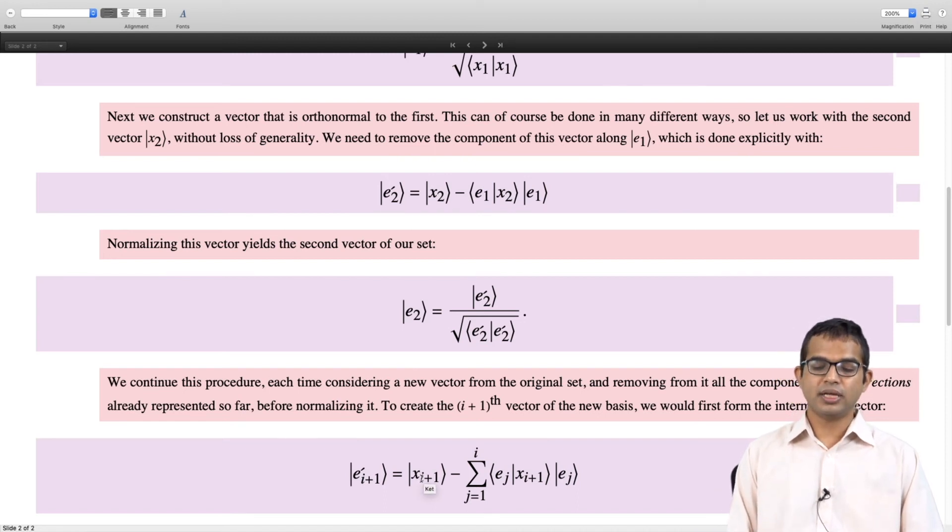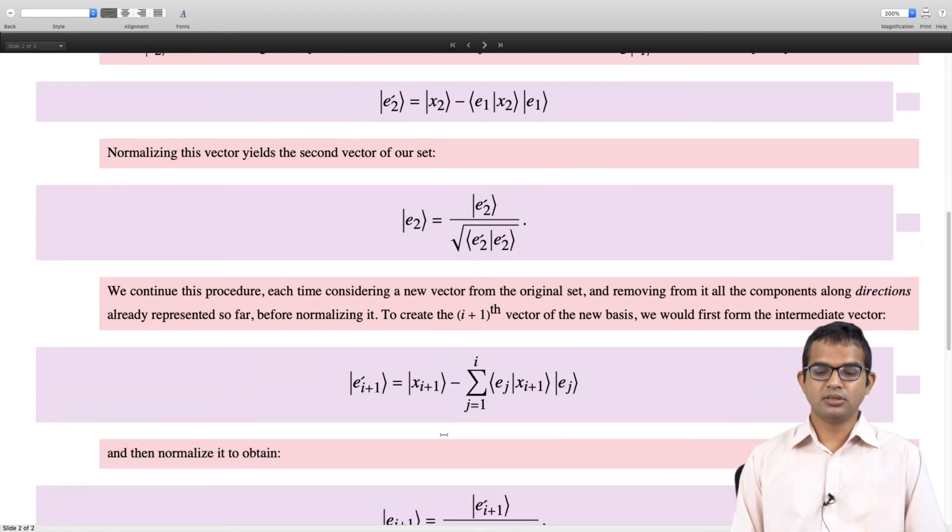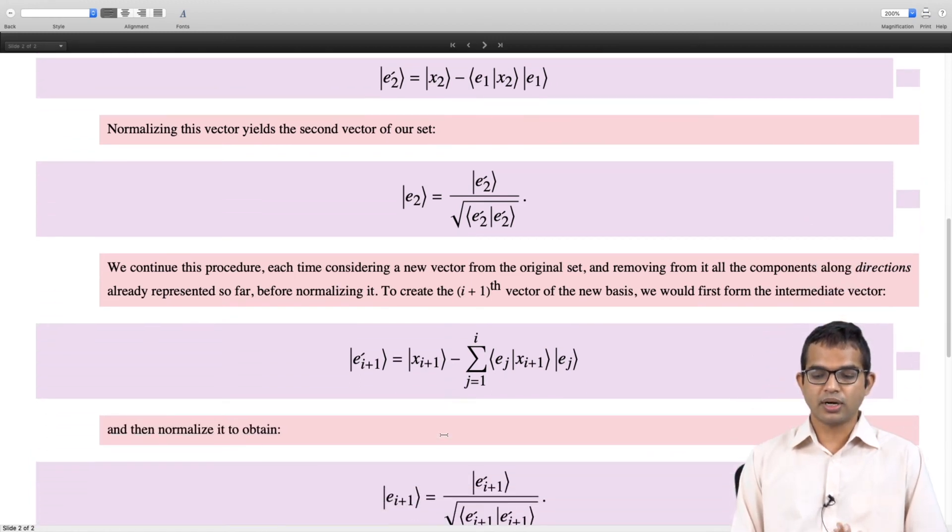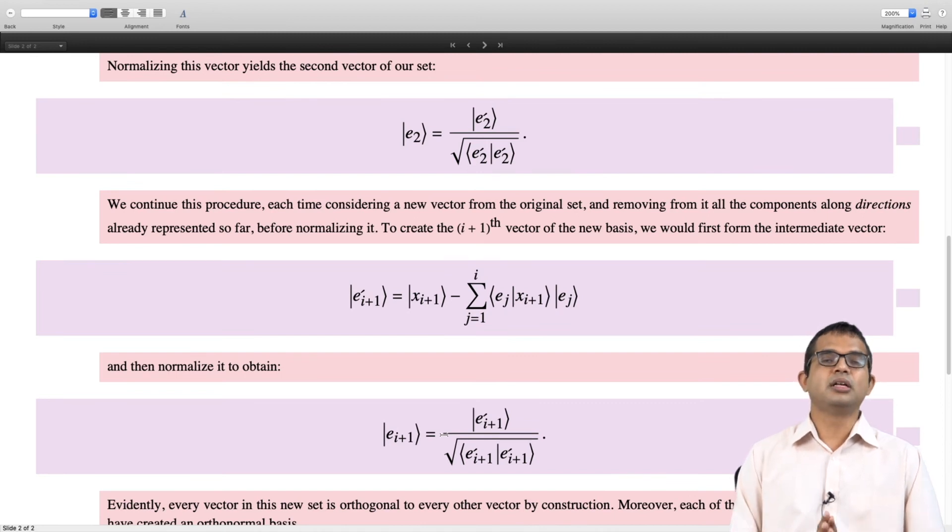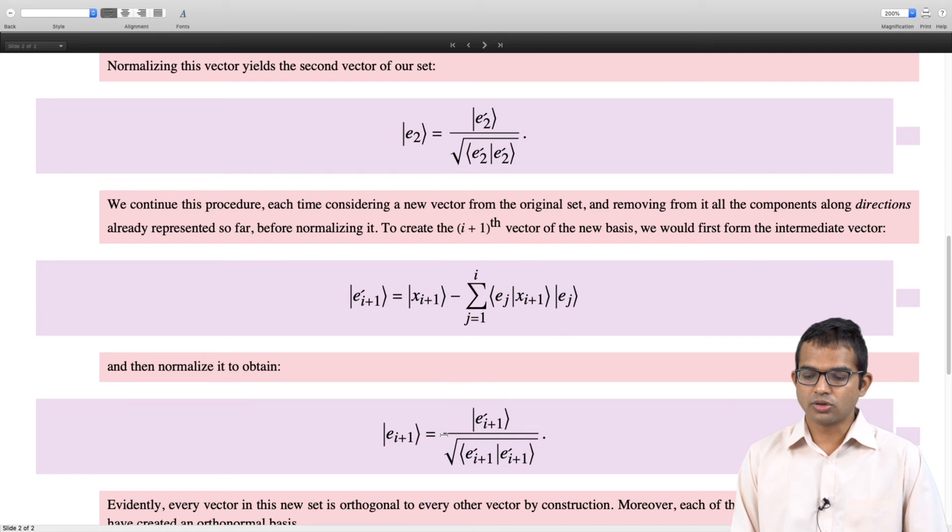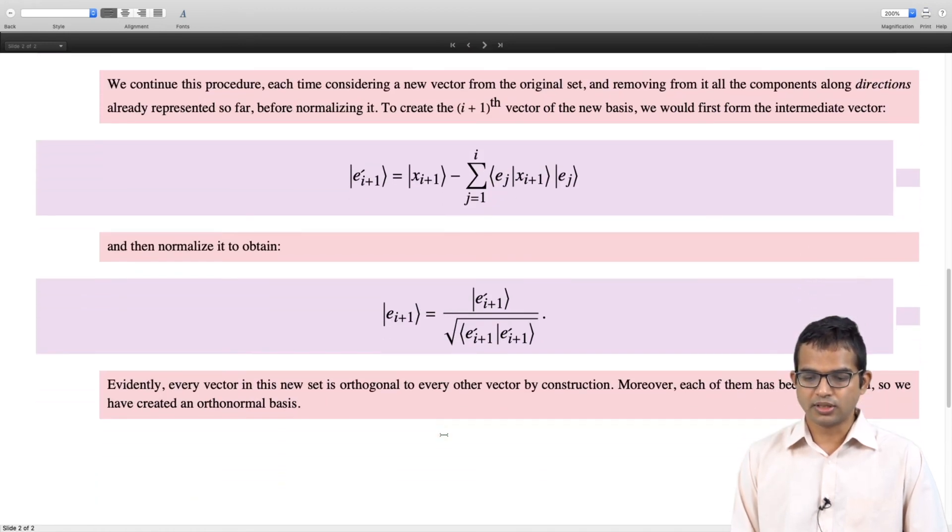E i plus 1 prime is going to be x i plus 1 minus summation over j of Ej times the inner product of x i plus 1 with Ej. Then you have to normalize it: E i plus 1 prime divided by square root of inner product of E i plus 1 prime with E i plus 1 prime. By construction, every vector in this set is orthogonal to every other vector and every vector has been explicitly normalized. You have created an orthonormal basis.